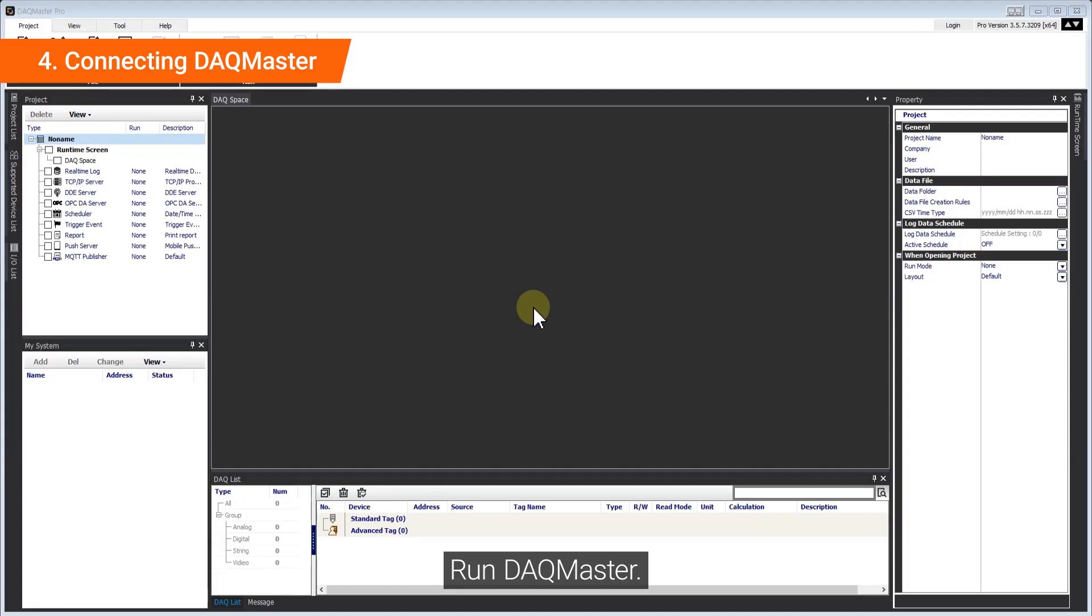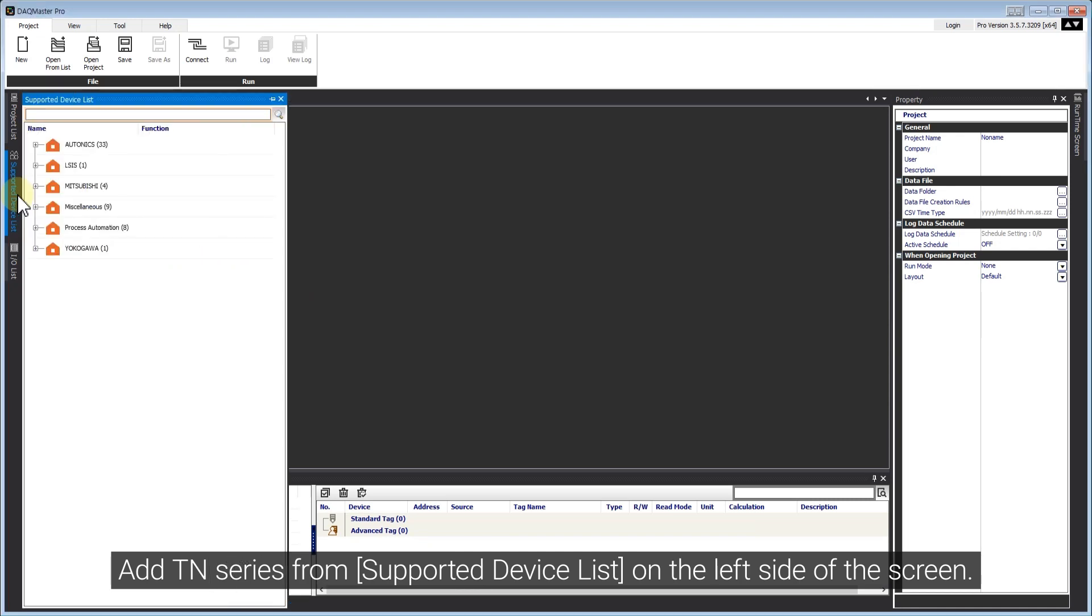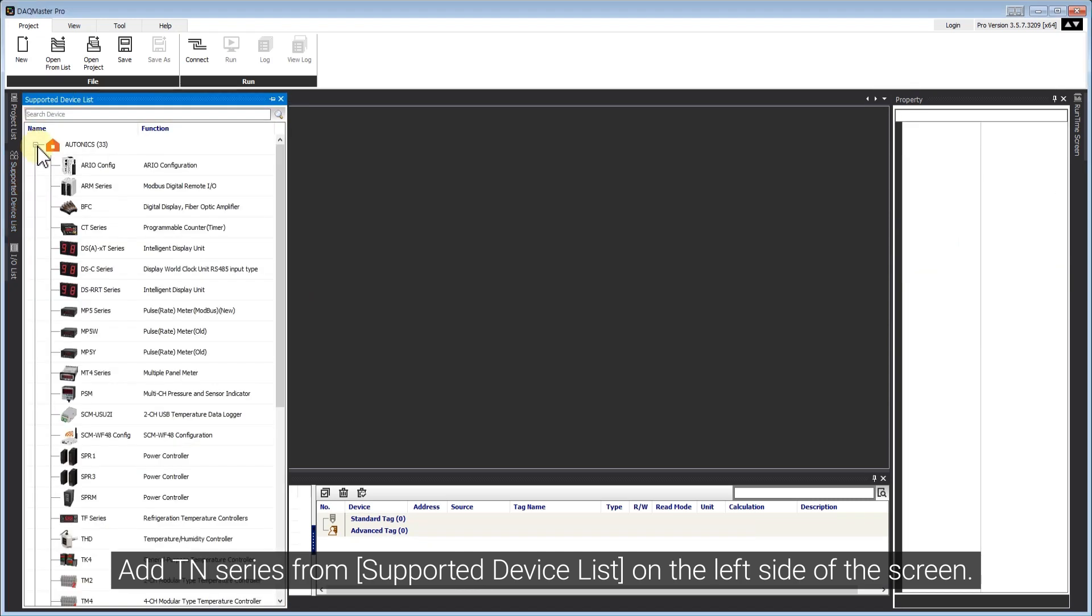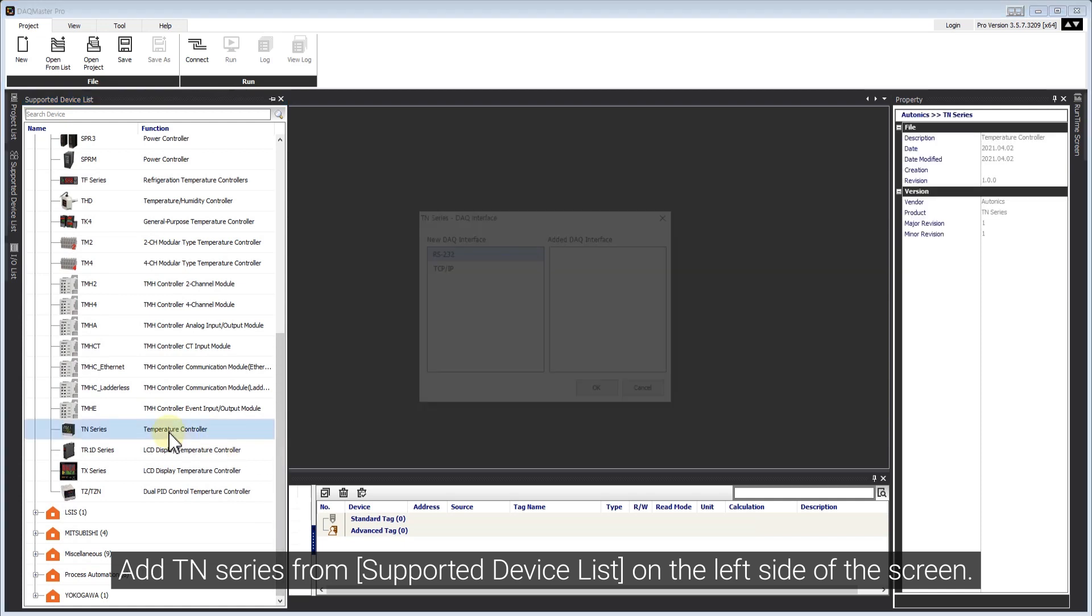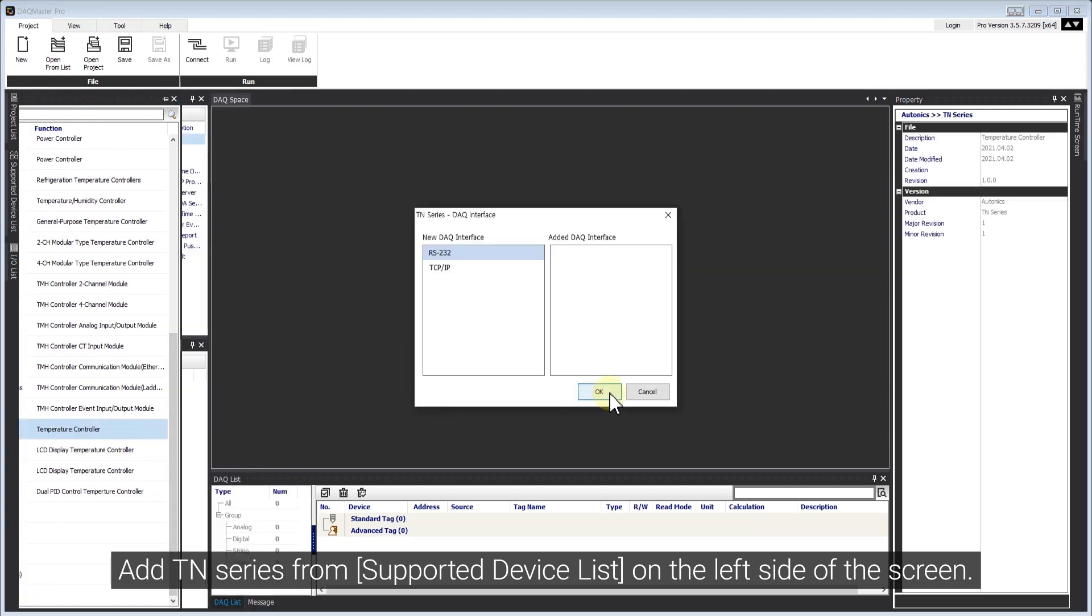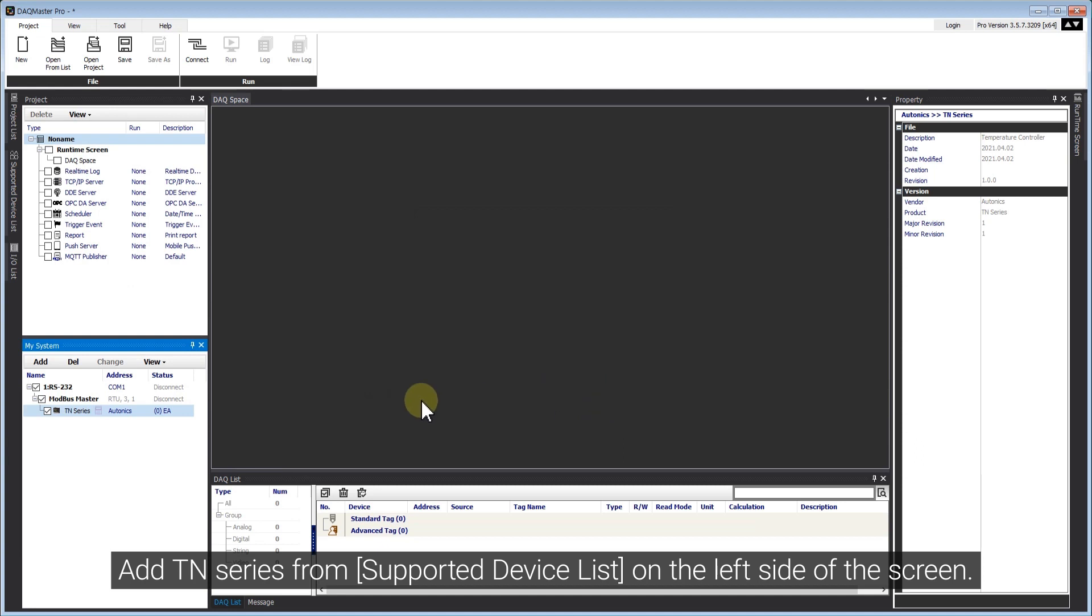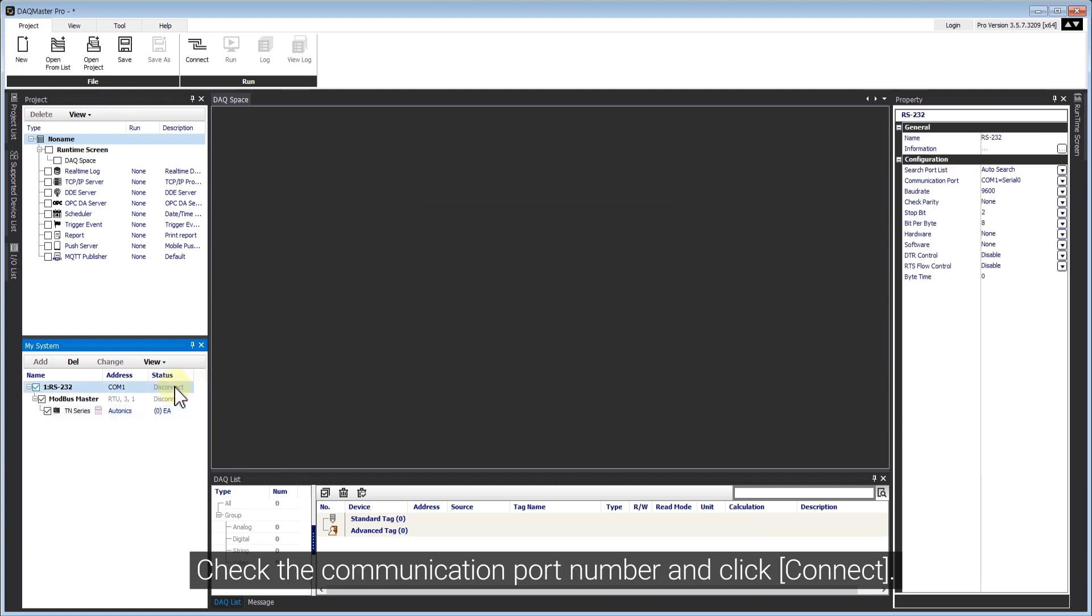Run DAQ Master. Add TN-Series from supported device list on the left side of the screen. Check the communication port number and click Connect.